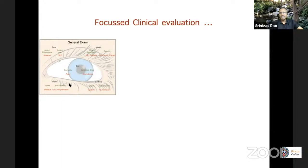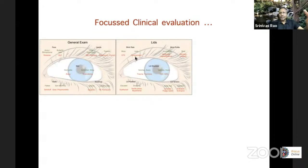When you look at the skin, look for atopic dermatitis, stretched and skinny skin suggestive of scleroderma. When you look at the scalp, look for dandruff. Look for ear deformities seen in gout and polychondritis. In the face, if the parotid glands and submandibular glands are enlarged, you think of Sjögren's. If the lymph nodes are involved, you think of tuberculosis or sarcoidosis.